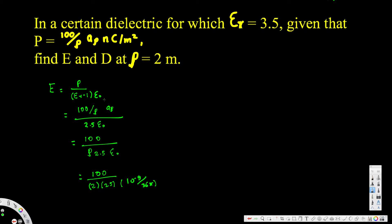Since the units are nanocoulombs per meter squared, nano means 10 to the power of minus 9, so I have to include that 10 to the power of minus 9. The two factors of 10 to the power of minus 9 cancel each other out, and simplifying gives us 2.262 times 10 to the power of 3 a_rho. This is our final answer for the electric field E.